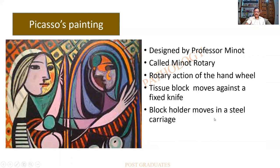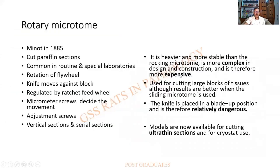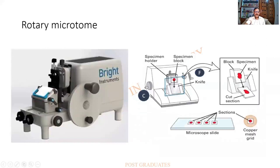Coming back to the rotary microtome — here is a much better modern version. There is a block holder which can be tightened by screws, and a knife whose angle can be adjusted. The instrument is quite heavy and sturdy, so vibrations are minimal. The fine adjustment is set for a certain number of microns, and with each complete rotation it advances the block by that many microns.